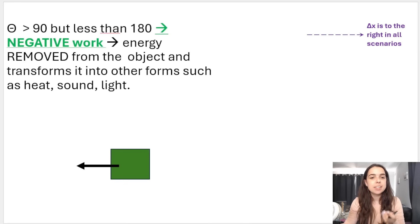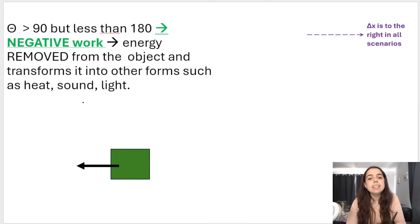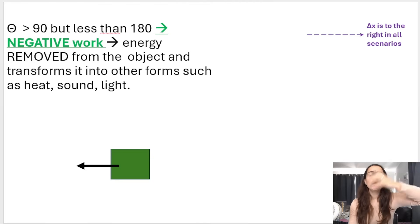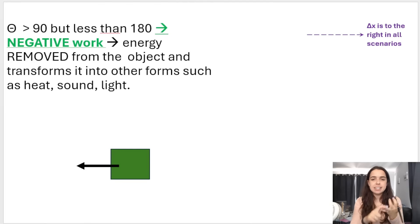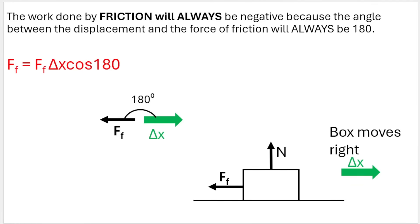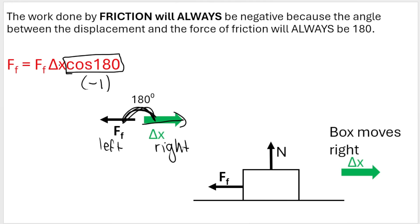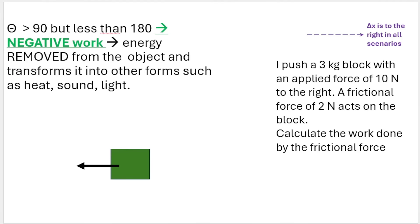Then there's negative work — that's when theta is greater than 90° but less than or equal to 180°. Negative work means energy is removed from the object and transformed into other forms like heat, sound, or light. Friction is an example of a force that does this. The box moves to the right, so displacement is to the right. Friction always acts opposite to motion — so friction acts to the left. The angle between them is 180°, and cos 180° equals negative one. Negative one multiplied by the force and displacement gives a negative answer — so friction does negative work.